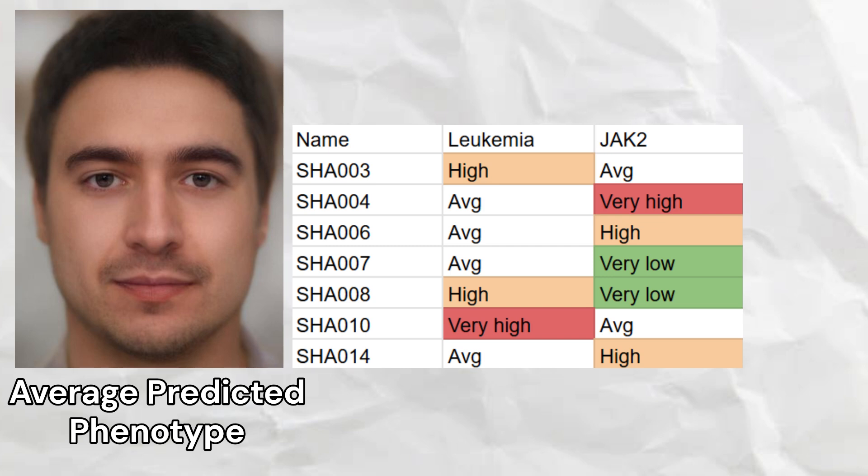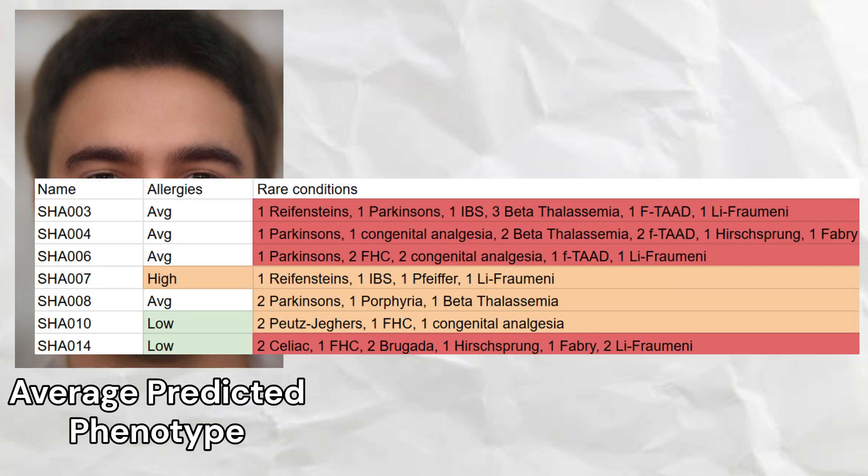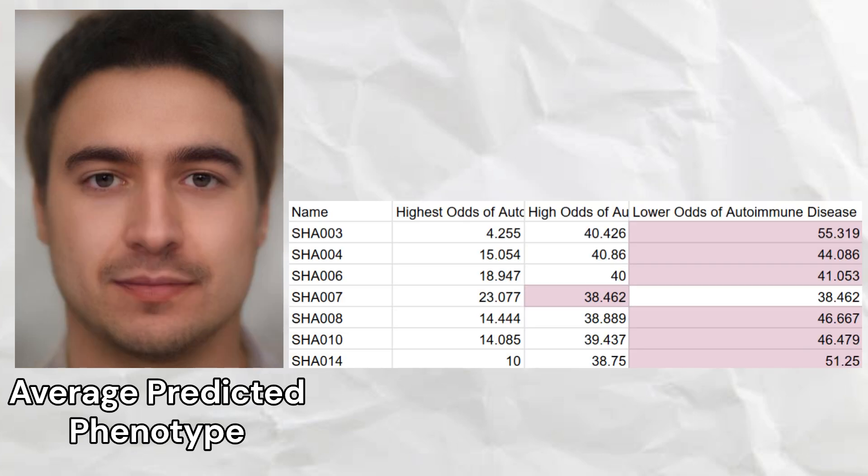Regarding blood cancers, they had a high predisposition to leukemia, and average predisposition overall to polycythemia vera on the basis of JAK2 genotypes. The Shah Tepe samples had average odds of allergies, and all of them carried a multitude of risk variants for rare conditions, the most numerous of which were Parkinson's disease and beta-thalassemia.